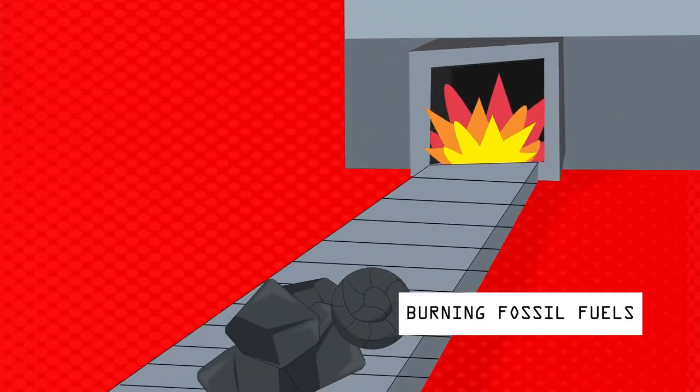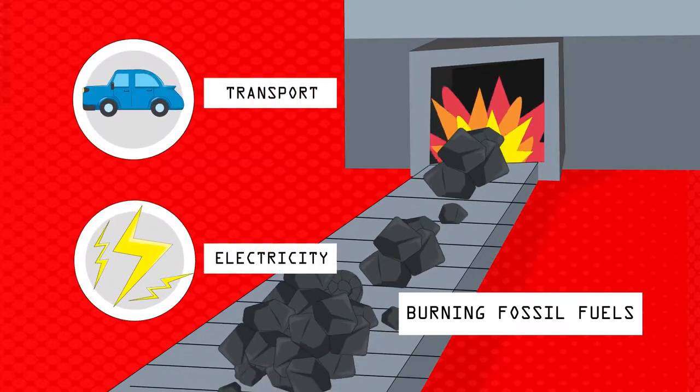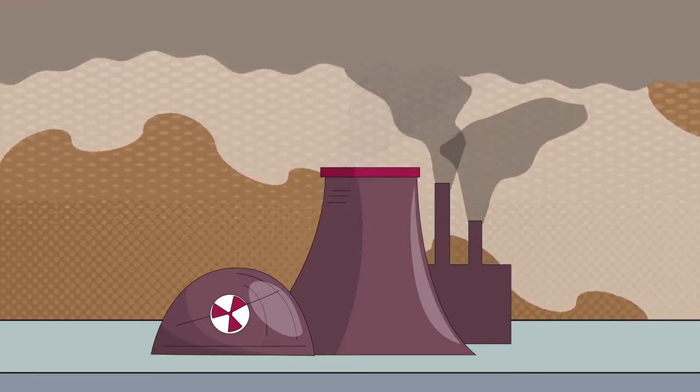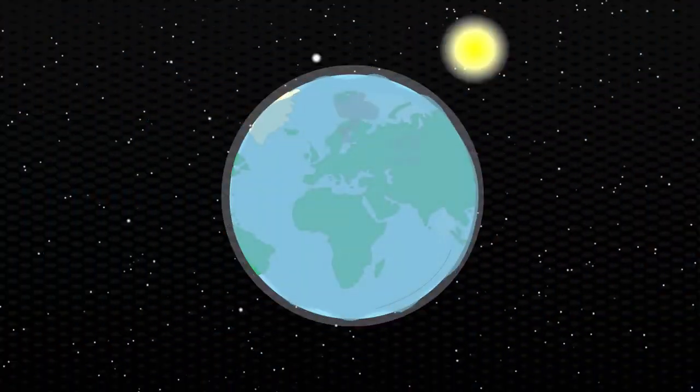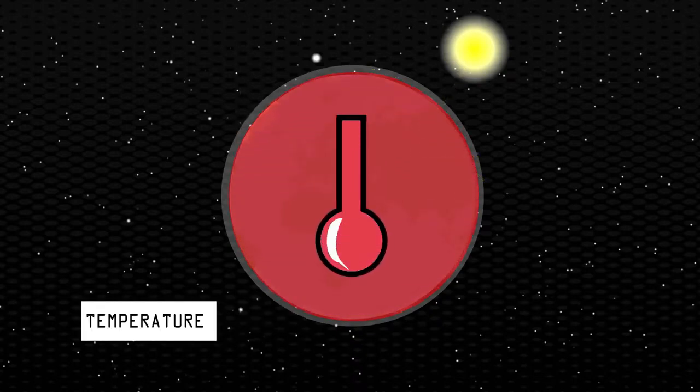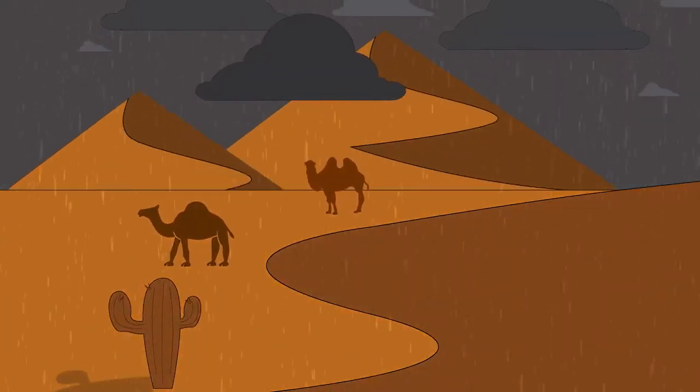Humans cause pollution by burning fossil fuels. We are reliant on them for transport and electricity generation. Burning fossil fuels releases carbon dioxide into the atmosphere, which is a greenhouse gas. Increased greenhouse gases cause an increase in average global temperatures, known as the greenhouse effect. This is linked to climate change.